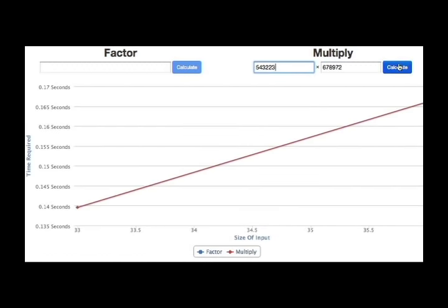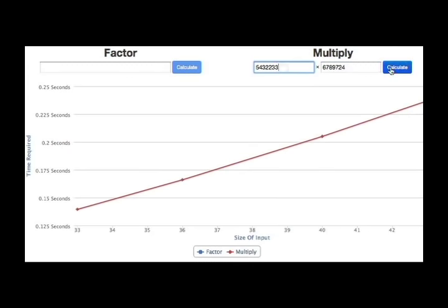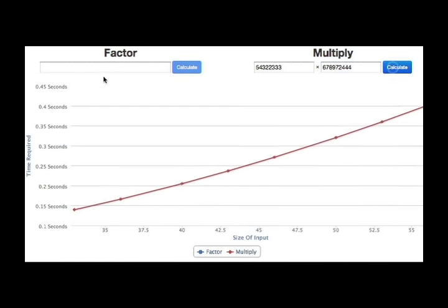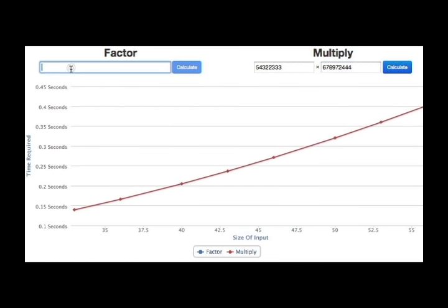Here is a graph that shows the time required for a computer to multiply two numbers. And of course, the time required to find the answer increases as the numbers get larger. Notice that the computation time stays well under one second even with fairly large numbers. Therefore, it is easy to perform.